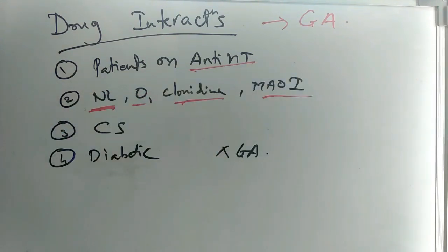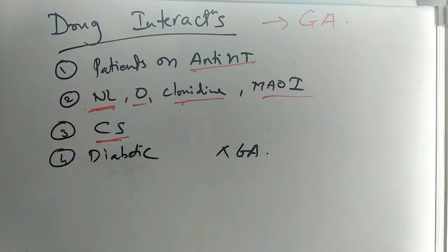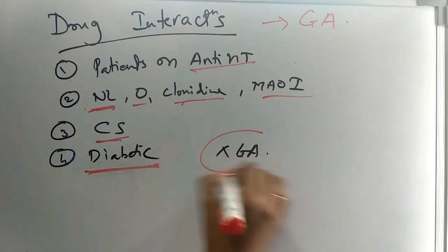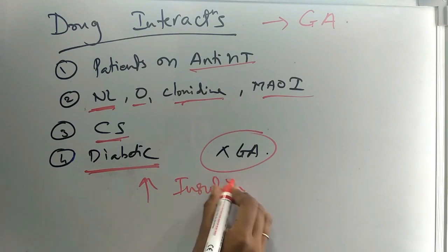Corticosteroid patients should also not be given general anesthetics. Diabetic patients should not be given general anesthetics because it will lead to increased insulin demand.